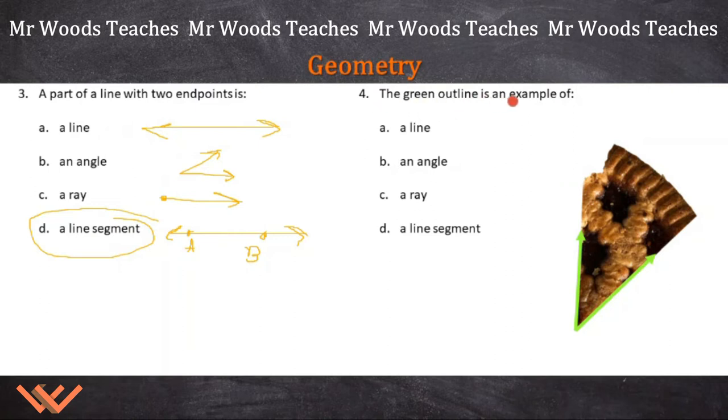Number 4. The green outline is an example of what? I have this point here coming out here and out here. Is it a line? No. Is it an angle? It's an angle, because that looks similar to this. It's definitely not a ray. If I didn't have this part here, this could be a ray. Is it a line segment? No. It's definitely an angle.